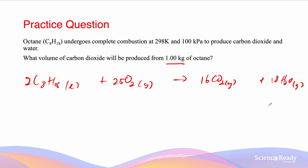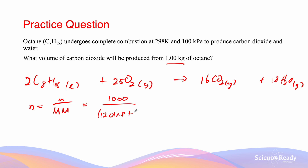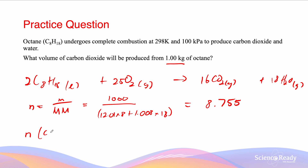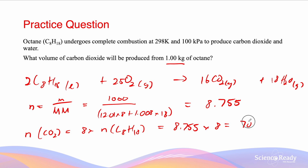The mass of octane is 1 kg. Using N = M/MM: N = 1000 / (12.01 × 8 + 1.008 × 18), which equals 8.755 moles. From the stoichiometric ratio, the number of moles of CO2 is 8 times the amount of octane. So N of CO2 = 8 × 8.755 = 70.04 moles.